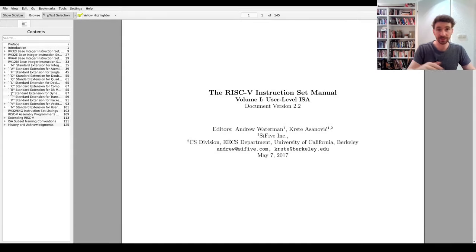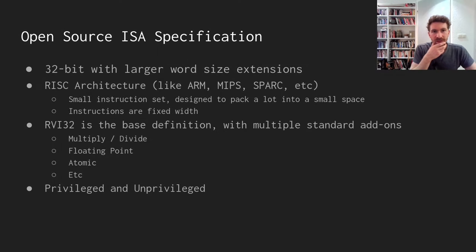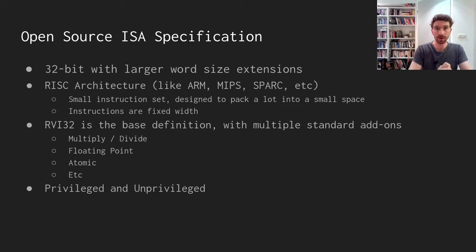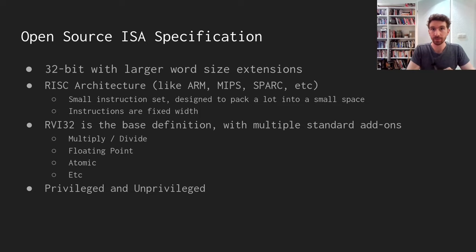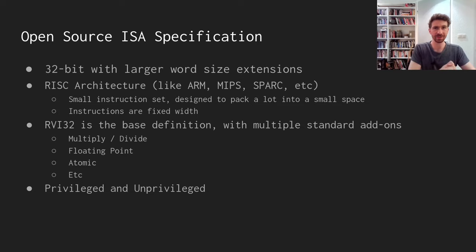You can see I have one of the specifications open here. You can download these specifications and they tell you exactly how the interface for this CPU needs to work. Then you can go and implement that interface in something like an FPGA, but also on actual silicon chips. You can produce those, sell them, and you don't have to pay any royalties to anyone. That's quite a big paradigm shift in how this industry works.